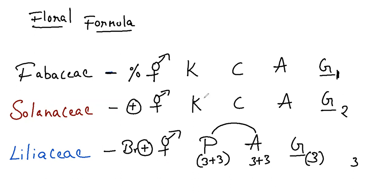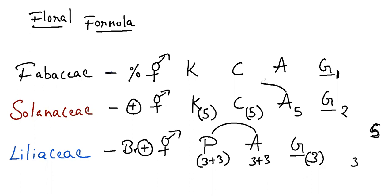For Solanaceae, remember the letter S looks like five. You have five, five, and five. The five sepals are fused and five corolla are fused. The androecium is epipetalous — fused with the petals. The gynoecium is bicarpellary, syncarpous, bilocular ovary, which is superior and hypogynous.